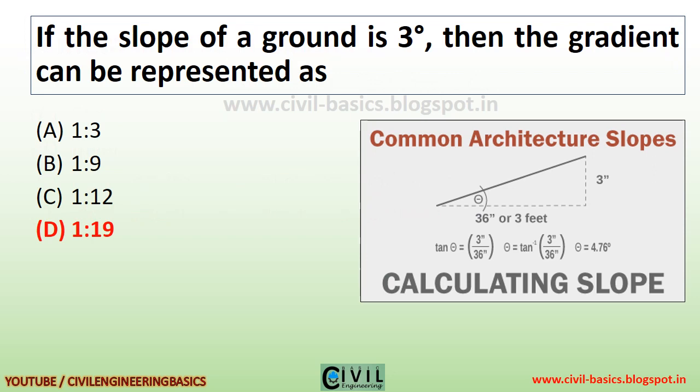If the slope of a ground is 3 degrees, then the gradient can be represented as 1:93.